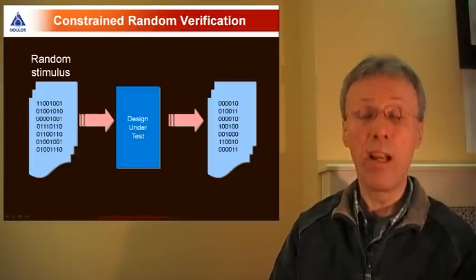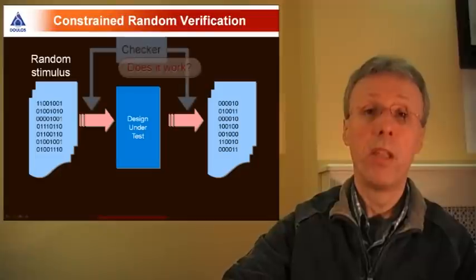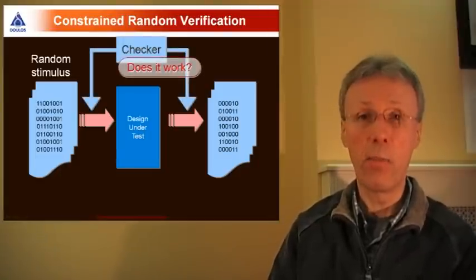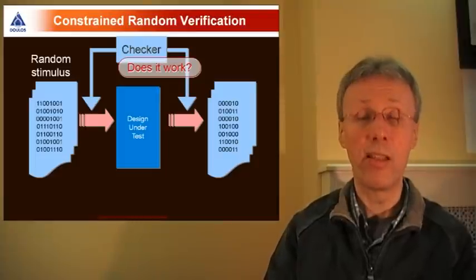Constrained random verification involves exercising a design under test using random test vectors and you need to do three particular things to make random stimulus useful and tractable. The first thing is to automatically check the results of simulation. It's no good eyeballing waveforms if your simulation stimulus is random.